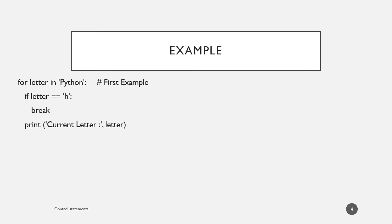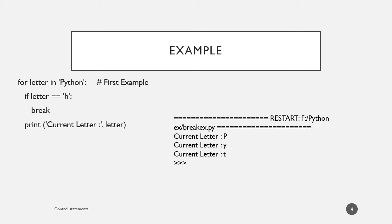Here, we are iterating through a set of characters of the string 'Python', and when the iterating variable encounters the character H, we are asking the system to break the loop. Otherwise, we will ask the system to print the current letter. So 'for letter in Python' means the iterating variable is letter and we are iterating through the string Python.